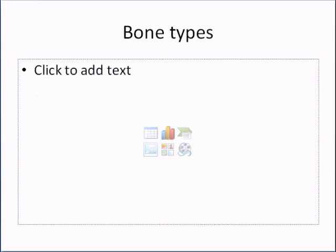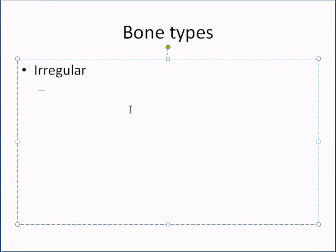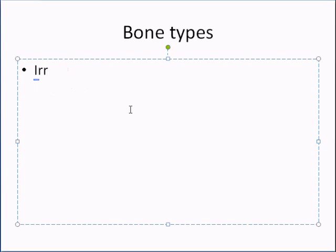Irregular bones are bones that don't specifically fit the other structures — they're not flat, not short, not particularly long. An example would be your vertebrae. So your vertebral column bones — C1, C2, and the rest — those would be irregular bones.